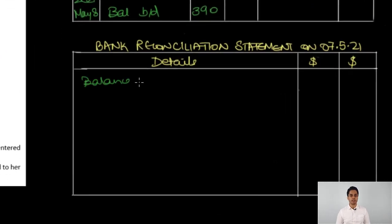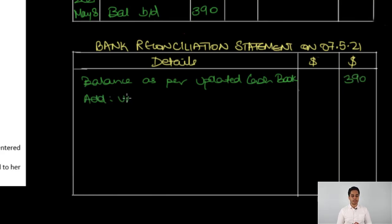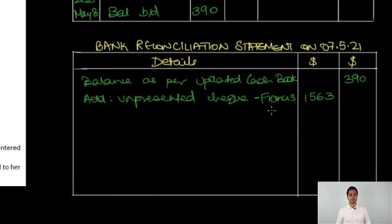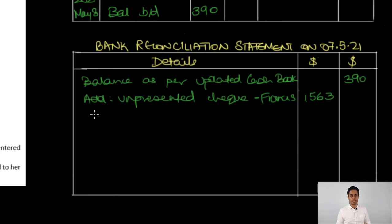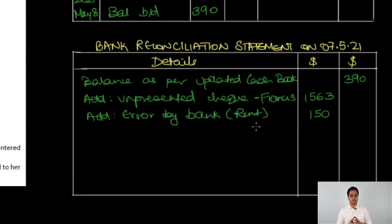We start preparing the bank reconciliation statement with the balance as per updated cash book of $390. Then we add the unpresented check paid to Francis on 6th May of $1,563. The bank error of rent $150 credited by mistake will also be added, because this mistaken credit has increased our bank balance. To reconcile our cash book balance with the bank statement balance, we add this $150 as well. The total added in the last column is $1,713, which is added to the cash book balance.